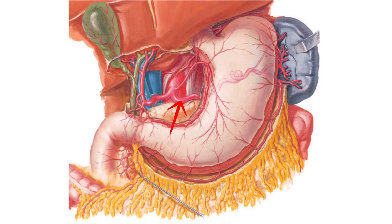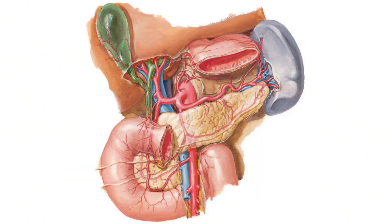The splenic artery is the largest branch of the celiac trunk. It takes a tortuous course to the left, posterior to the stomach, along the superior border of the pancreas. Here it gives off numerous pancreatic branches: dorsal, greater, and other small pancreatic branches.